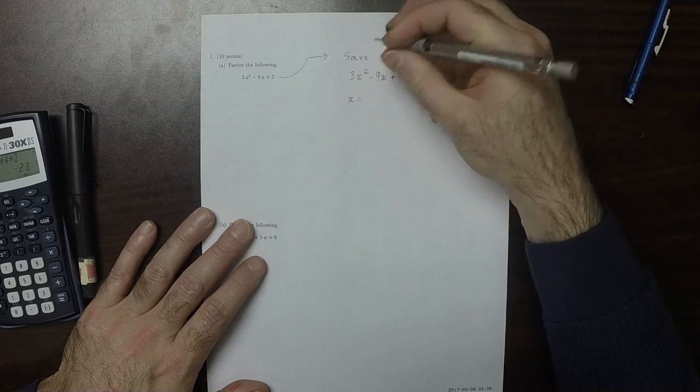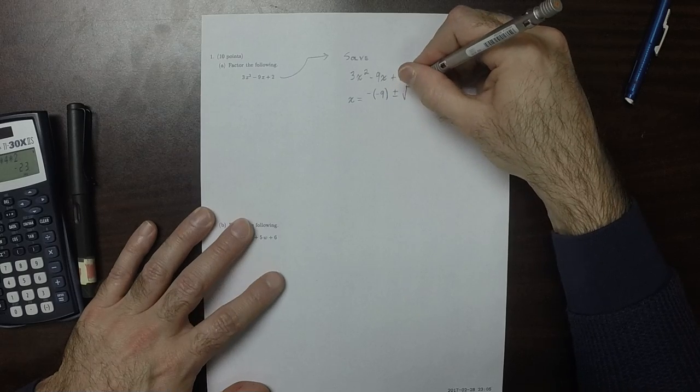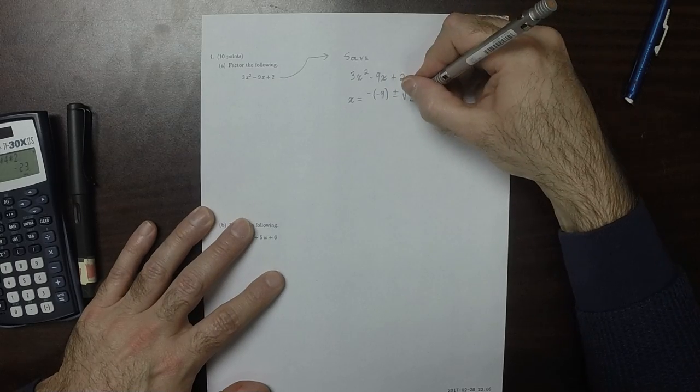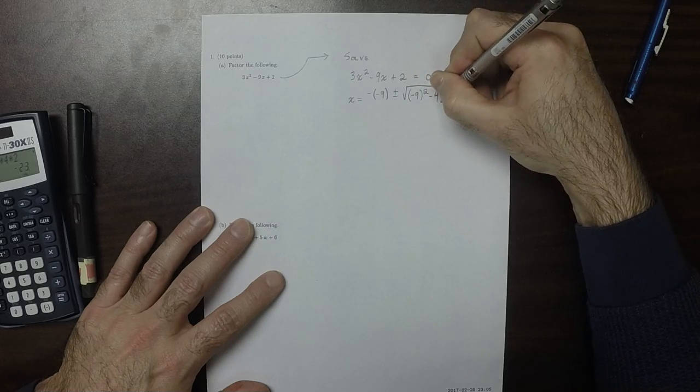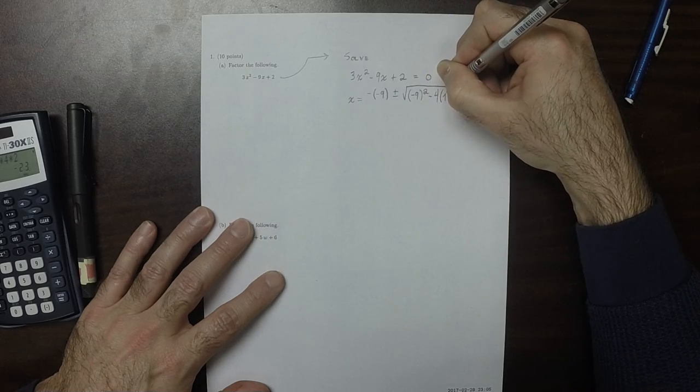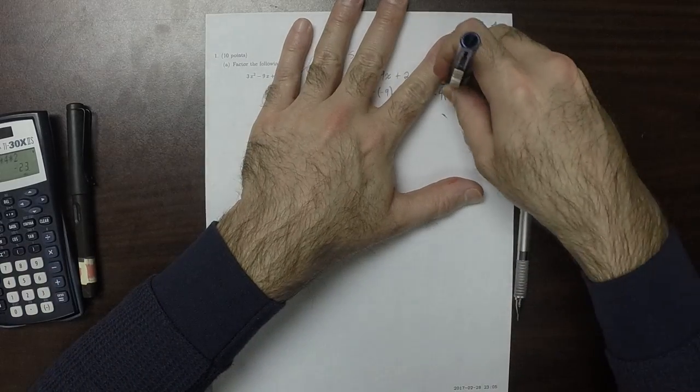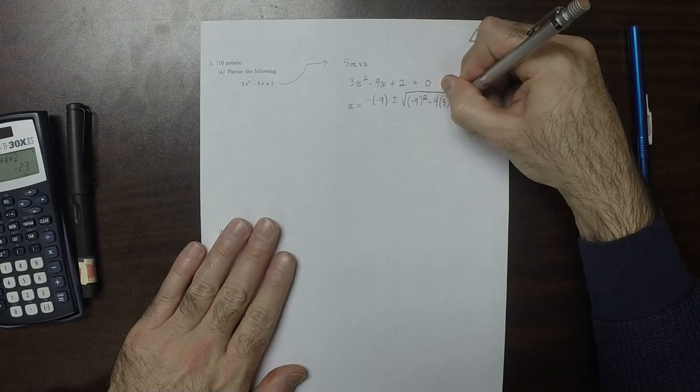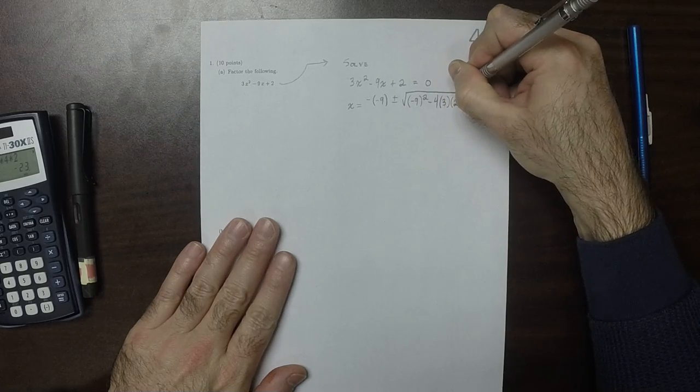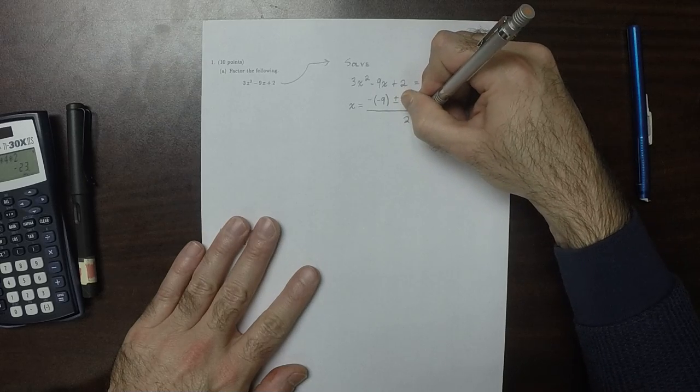So that would be negative negative 9 plus or minus the square root of negative 9 squared minus 4 times 3 times 2, and all of this divided by 2 times 3.